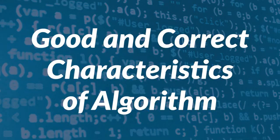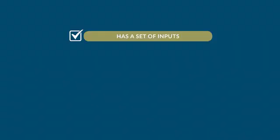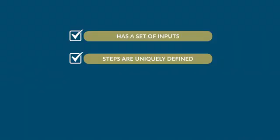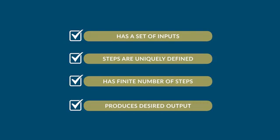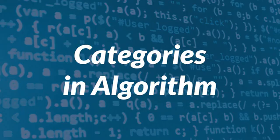The following are the good and correct characteristics of an algorithm: as a set of inputs, steps are uniquely defined, it has a finite number of steps, and it produces the desired output. We also have different categories in algorithms: search, sort, insert, update, and delete.